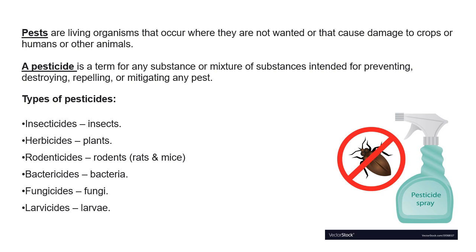First, what are pests? Pests are living organisms that occur where they are not wanted, or they cause damage to crops, humans, or other animals. Unwanted insects are what we call pests. A pesticide is a term for any substance or mixture of substances intended for preventing, destroying, repelling, or mitigating any pest.